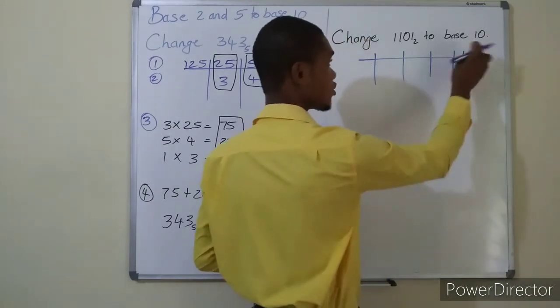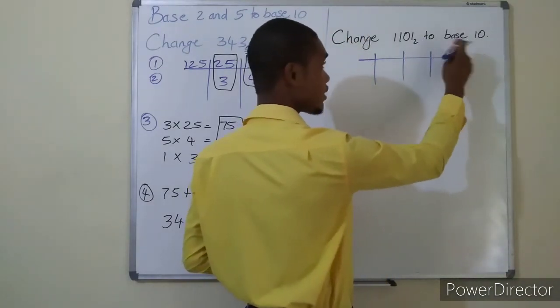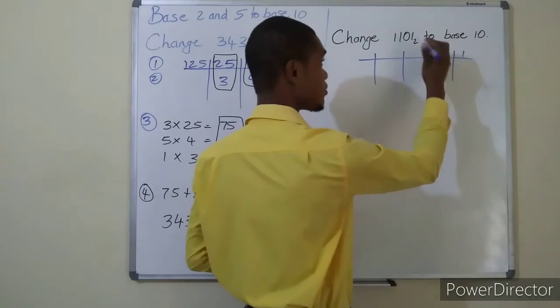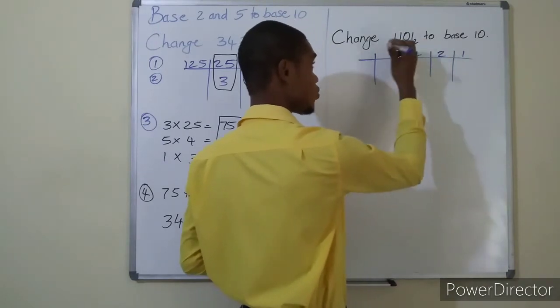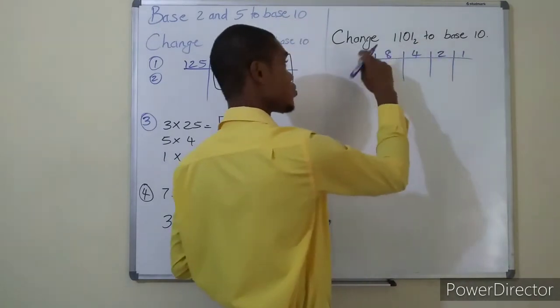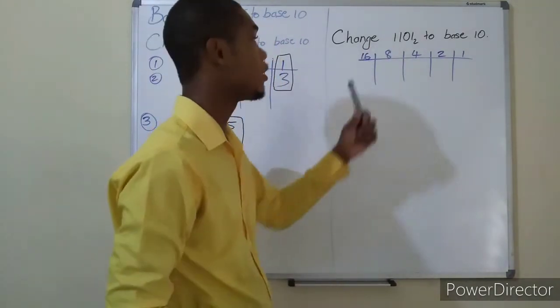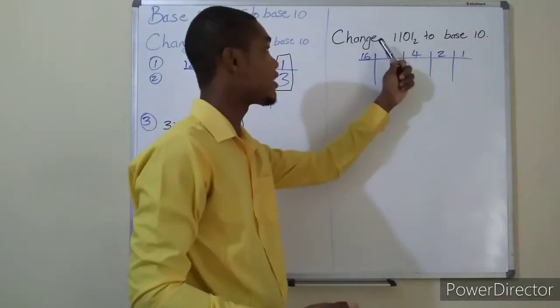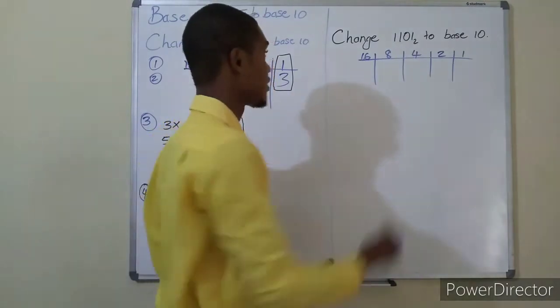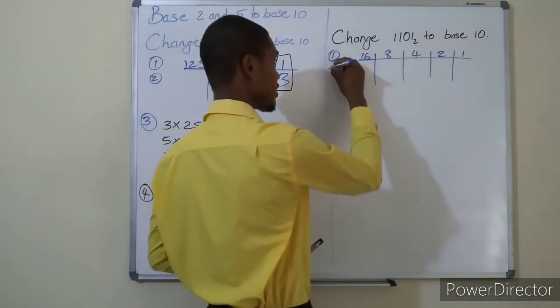The numbers start at one. Dealing with base two, so two times one gives you two, two times two is four, four times two is eight, eight times two gives you sixteen, and you can continue on until enough places are there that can hold all the numbers. So step one is done.